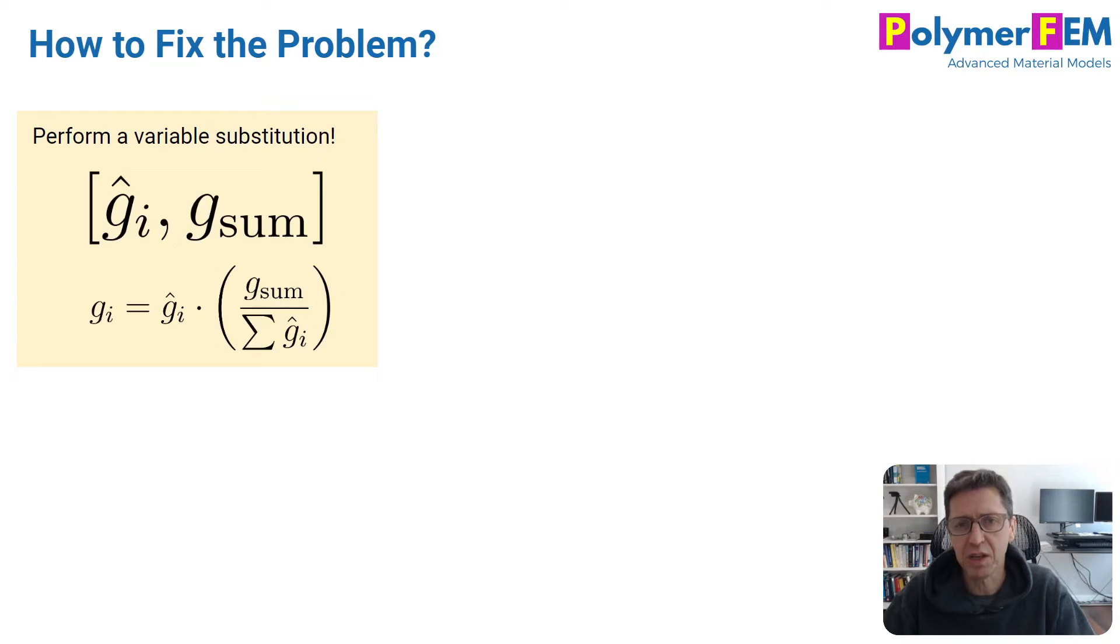So we don't actually, in MCalibration, use the Prony series as defined. We come up with a different set of parameters that remove these constraints on the g parameters and make it easier to optimize this equation. So we introduce g_i hat values. So these are the rel g values. And then we have a g_sum parameter. And then the actual Prony parameters which are needed for the stress calculations are calculated from these variables using this equation. So g_i equals g_i hat times g_sum divided by the summation of all the g hat values.